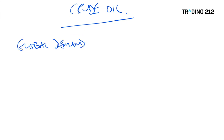So what drives oil? Global demand is an obvious one. When economies are doing well, people are spending money, goods are being produced by factories and flown around the world — oil is involved in all of those processes. So when economies are expanding, we normally see the price of oil trading pretty high. If there's a threat of recession or a real slump, that's when we'll see pressure on the oil price. At the beginning of 2015, we saw a big slide in the price of oil because of concerns about the Chinese economy slowing down.